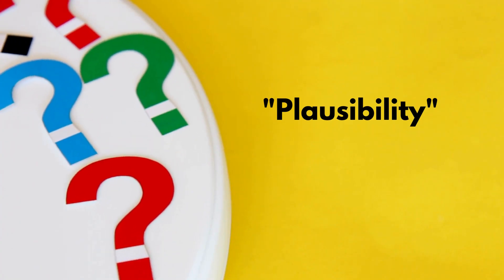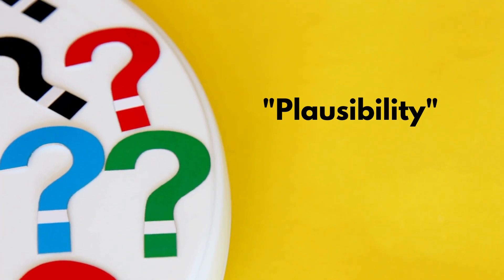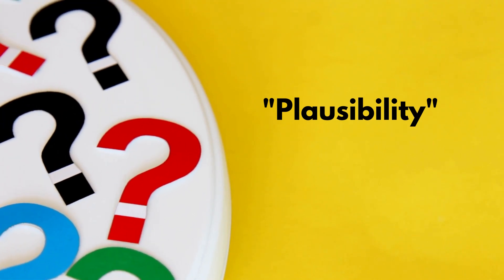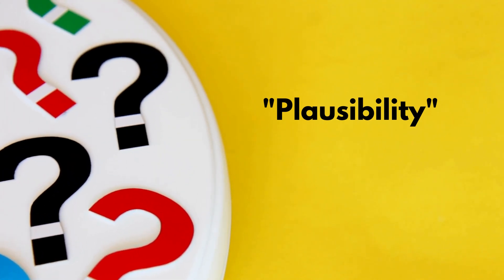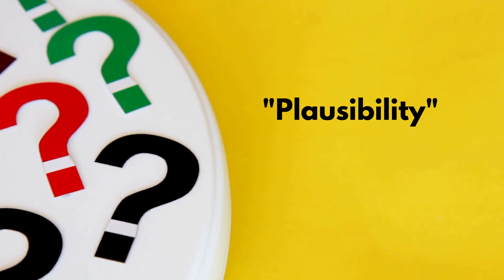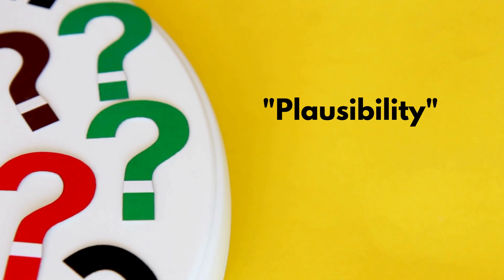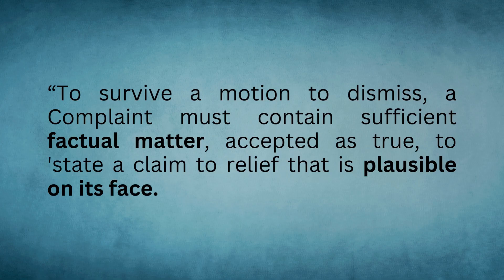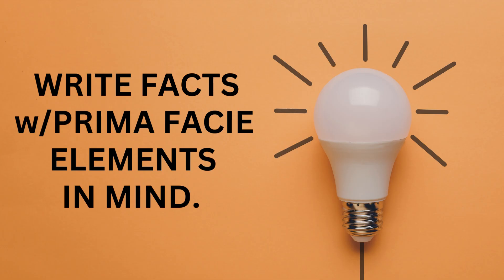Plausibility is defined as being probable, reasonable, or giving the appearance of truth. To survive a motion to dismiss, a complaint must contain sufficient factual matter, accepted as true, to state a claim to relief that is plausible — reasonable, with the appearance of truth on its face.